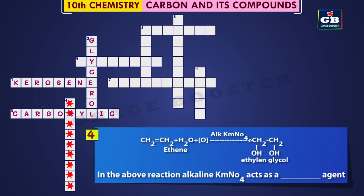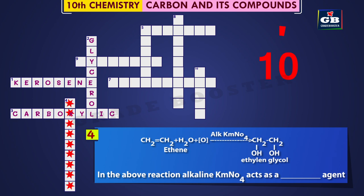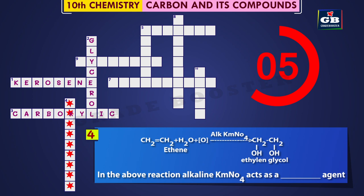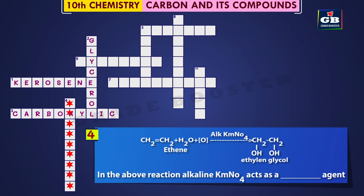4 Down: Ethene plus water plus oxygen gives rise to ethylene glycol in the presence of alkaline KMnO4. In the above reaction, alkaline KMnO4 acts as a dash agent. Did you get the answer? Oxidizing agent.